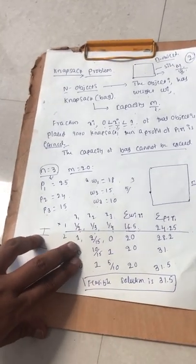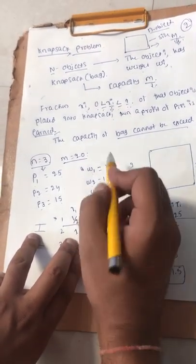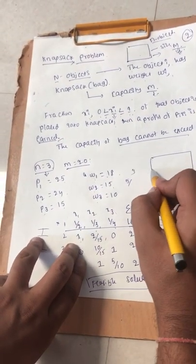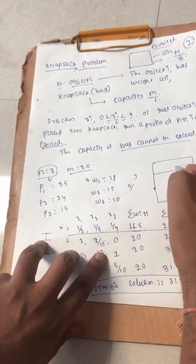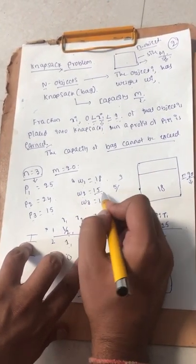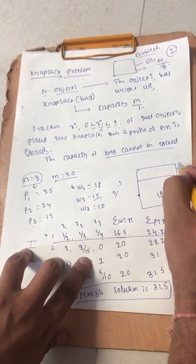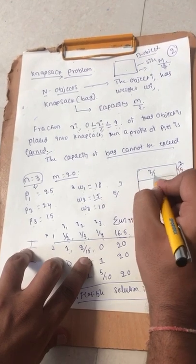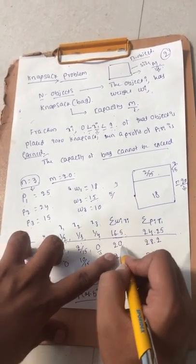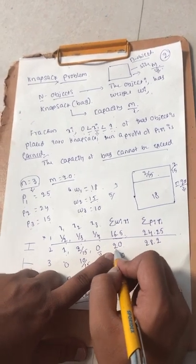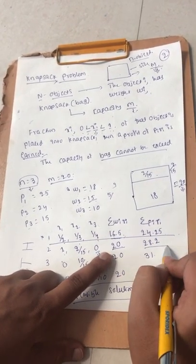In the second subset, I take the full weight of object 1, which is 18. Now the remaining capacity is 2. The weight w2 is 15, so among 15 I take 2/15 of it. The bag is now full and the remaining weight is not taken. If we calculate w_i times x_i we get 20.